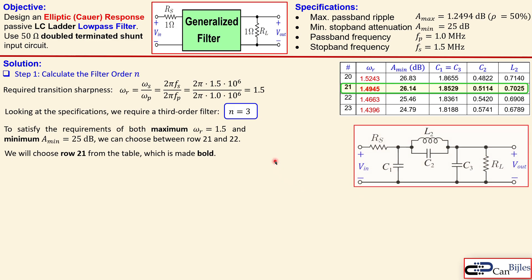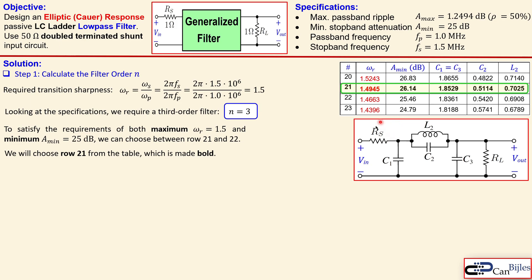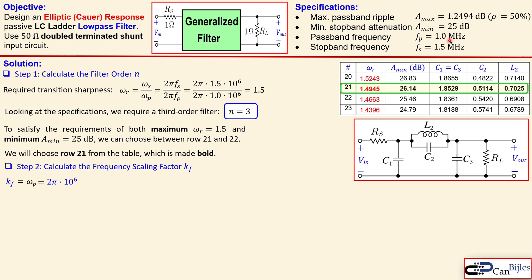Looking at the circuit in more detail — this is not the final circuit — we have C1, C2, L2, and C3. C1 and C3 have the same normalized value of 1.8529 farads; C2 is 0.5114 farads; and L2 is 0.7025 henries. This gives us the required transition sharpness and approximately 26 dB minimum attenuation. Before moving on, we calculate the frequency scaling factor Kf, which is simply two pi times 1 MHz — our passband frequency in radians per second. This will be used later to calculate the scaled component values.